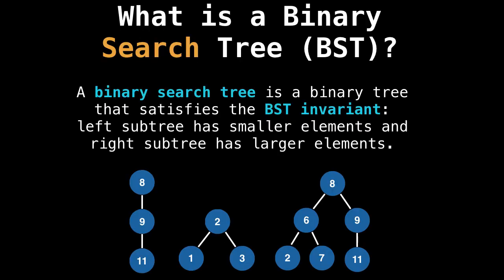Let's move on to binary search trees. What is a binary search tree? Well, first of all, it's a binary tree, but furthermore, it also satisfies what's called the binary search tree invariant. That is, the left subtree has smaller elements than the value of the current node, and the right subtree has larger elements than that of the current node. Below are a few binary search trees.